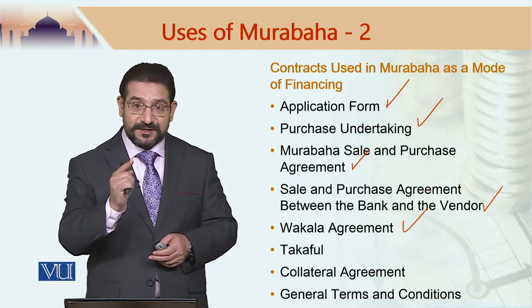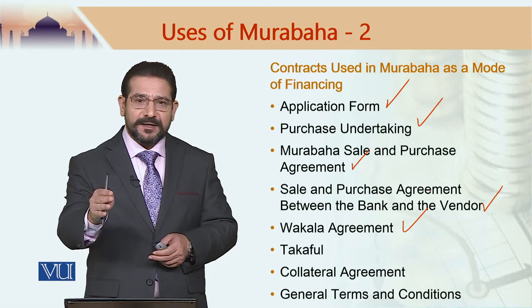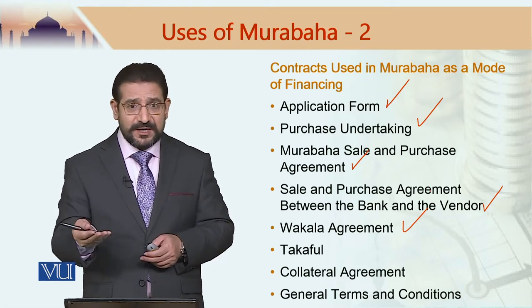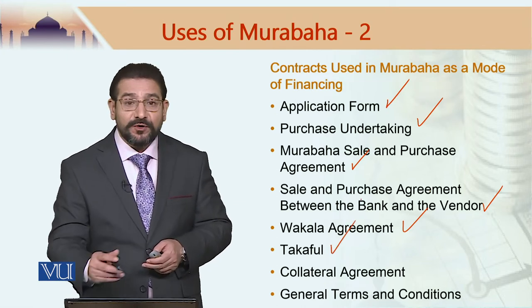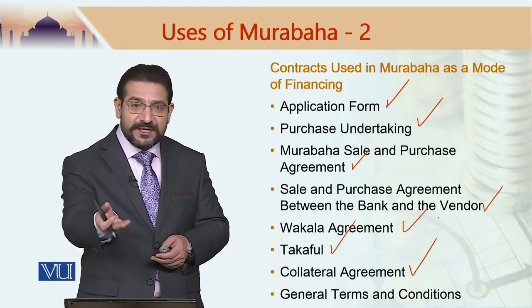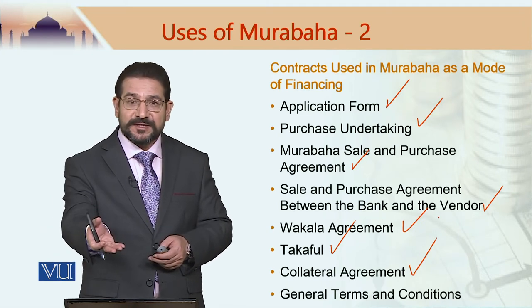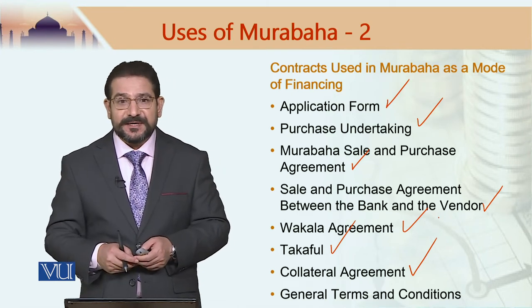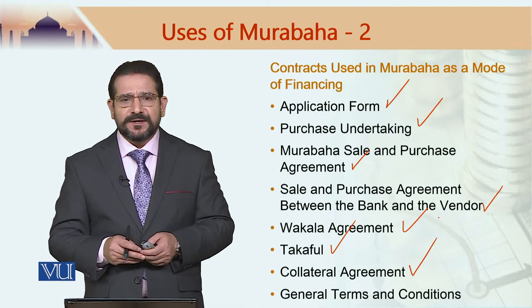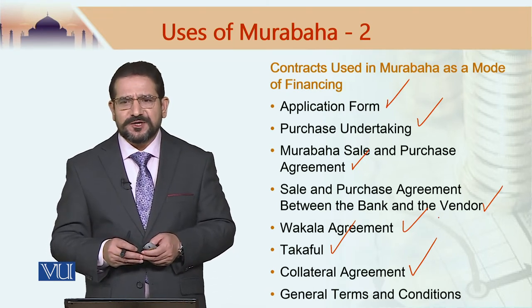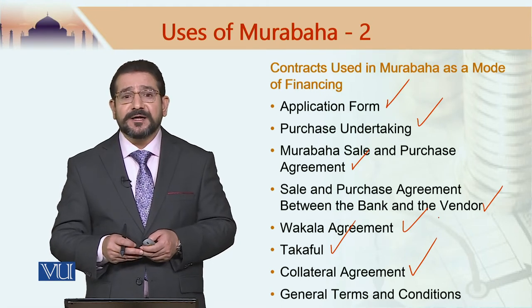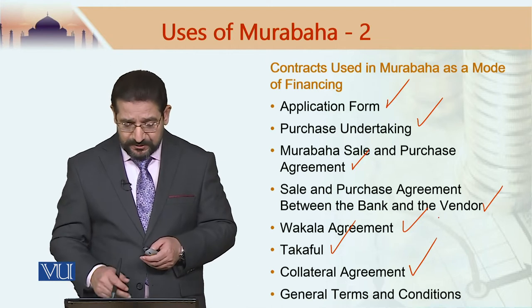In some cases there is a wakala agreement as well. The bank may appoint the customer as its agent to buy the house and then sell it to himself on behalf of the bank. Similarly in the case of cars, there is a takaful arrangement as part of the deal. There is also a collateral agreement — bank ne finance ki hui hai (the bank has provided financing) — and the bank would like to make sure that the money is returned, so a collateral agreement is in place. There are also general terms and conditions which the customer has to sign.